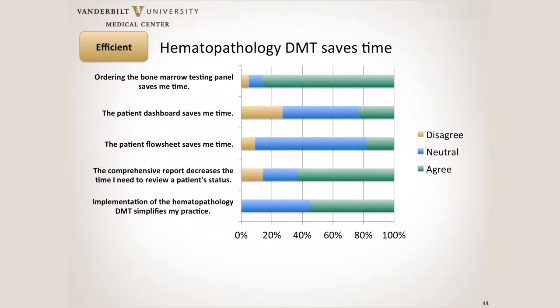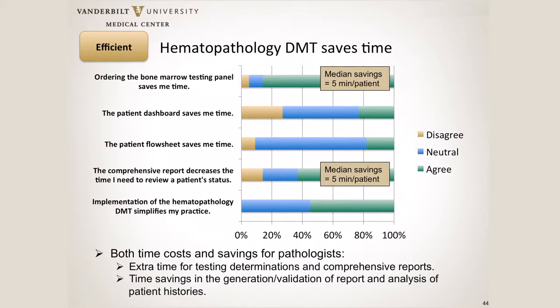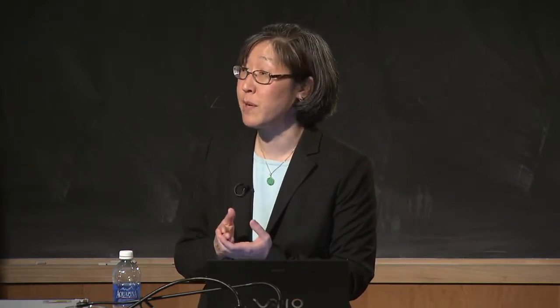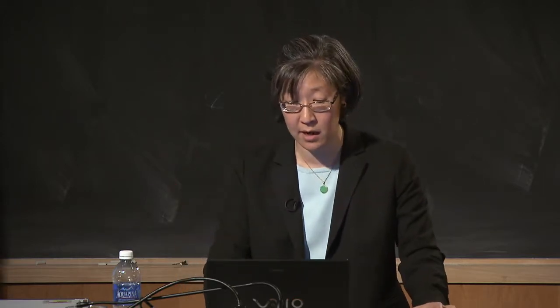The DMT also needs to be efficient. The two areas where it saved the most time for clinicians were ordering the Bowmer testing panel instead of individual a la carte tests, and reviewing the patient's status. Before going into the patient's room, they just pull up the comprehensive report and have all the data, rather than hunting around through five different reports in the EMR. Sum total, this is saving them about 10 minutes per patient. If you imagine how many patients are getting bone marrows every day, they can now see extra patients during this time — we've actually increased their ability to see additional patients.